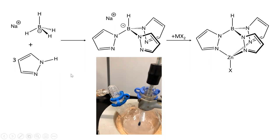Prior to starting the process of coordination, our ligand of choice, tris(pyrazolyl)borate, needed to be synthesized from a borohydride and a three-fold excess of pyrazole. The interaction of the borohydride and the pyrazole occurs without the presence of solvent and results in the release of hydrogen gas at high temperatures, yielding a product without the need for further purification.